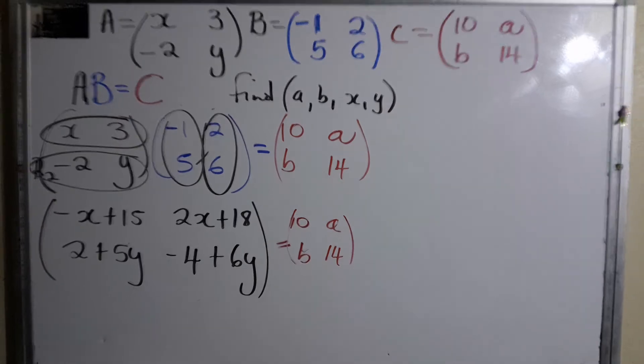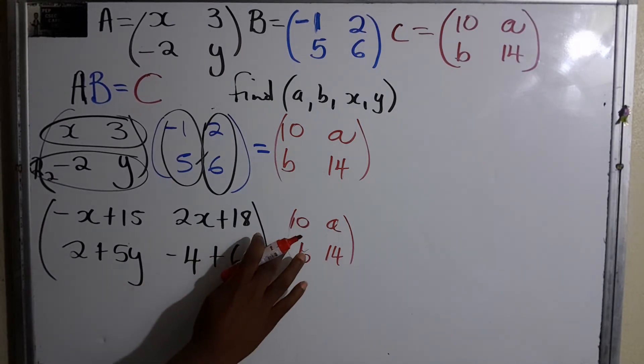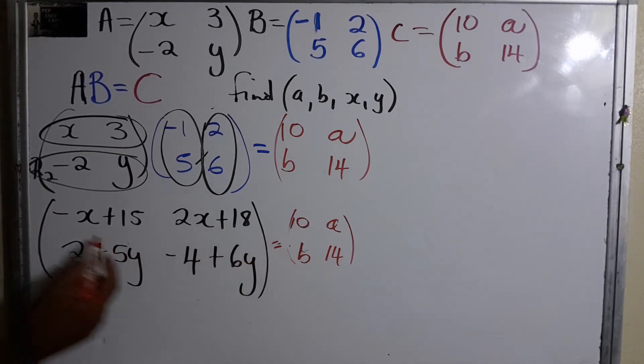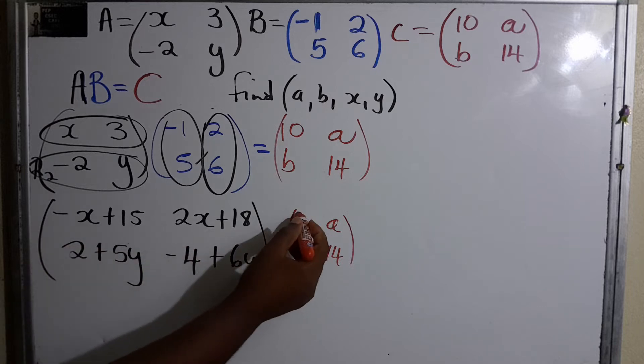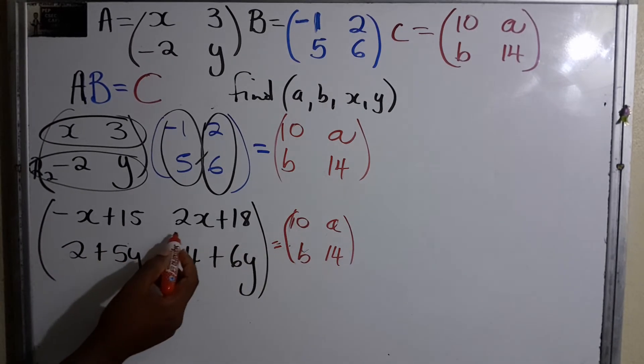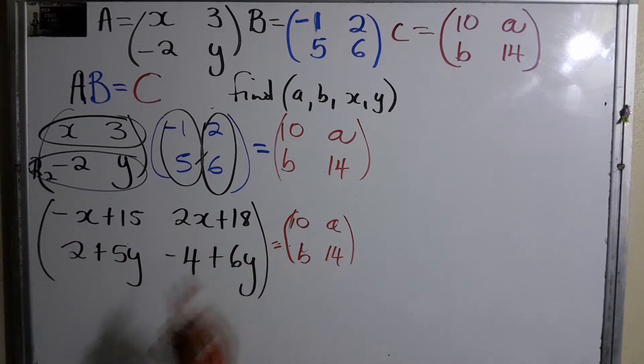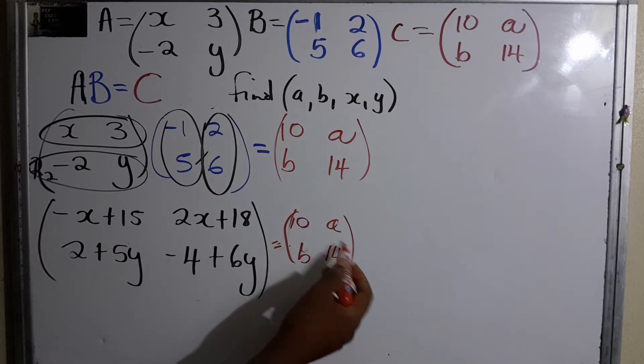So now we're going to equate it to all of this, which is equal to (10, a; b, 14). What this actually means is we're going to equate the corresponding values. So all of this is going to equal to 10, same position. 2x plus 18 is going to equal to a, and 2 plus 5y is going to equal to b, and -4 plus 6y equals 14.